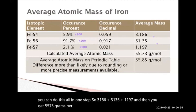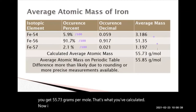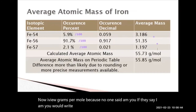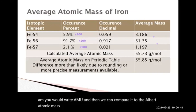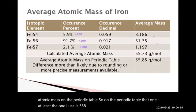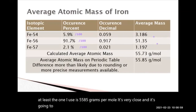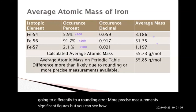That's what you've calculated — 55.73 grams per mole. I use grams per mole because no one said AMU; if they say AMU, you would write AMU. We can compare it to the average atomic mass on the periodic table — the one I use shows 55.85 grams per mole. It's very close, and the difference comes down to rounding error, more precise measurements, and significant figures. You can see how close doing the weighted average mass gets you.